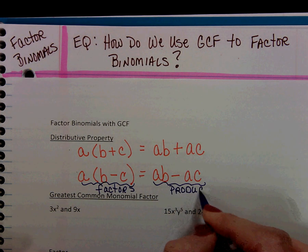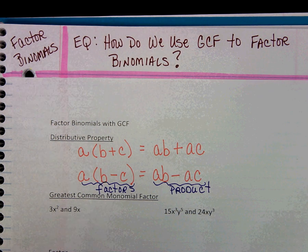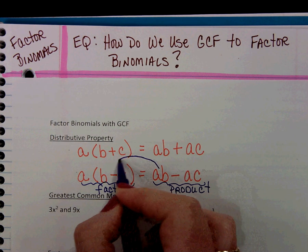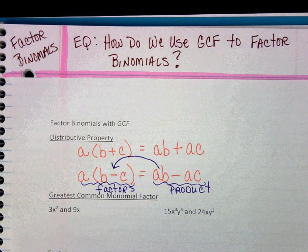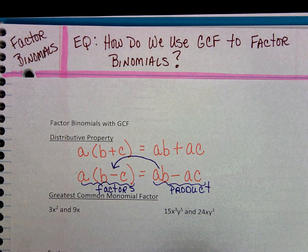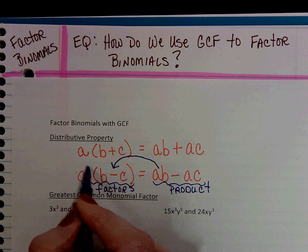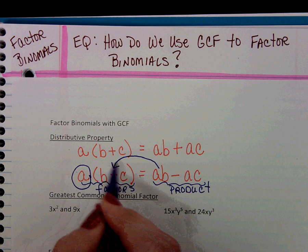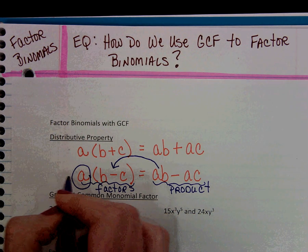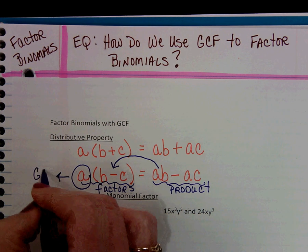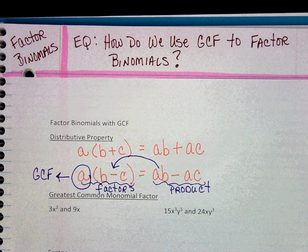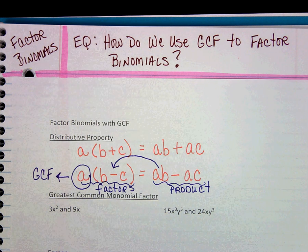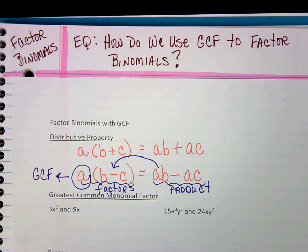What we're going to start doing with factoring is we're going to start with the product and end up with the factors. What I want you to see here is that this A that we originally might have distributed, that's going to be what our greatest common factor is. It's something I can divide out or pull out from our product.